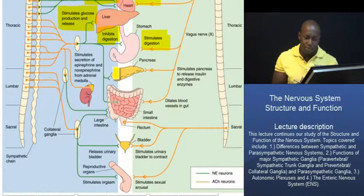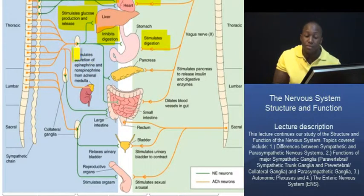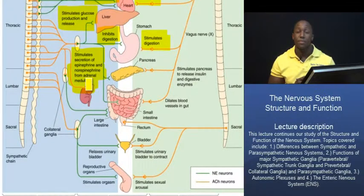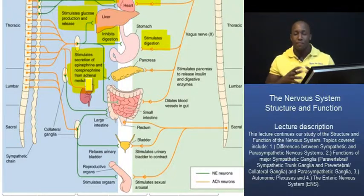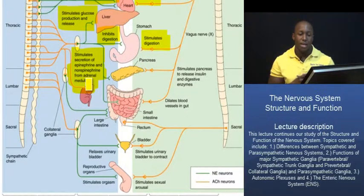The sympathetic division will also mediate a few responses unique to itself — for instance, the release of epinephrine and norepinephrine from the adrenal medulla. Those are two important hormones involved in fight or flight responses. They do things such as accelerating our heart rate, increasing our rate of ventilation, and pretty much preparing our bodies for action.